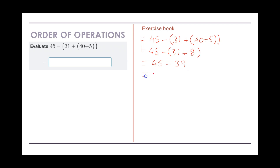Now we've just got one operation left: 45 minus 39 equals 6. Even though it looked fairly complicated with all those brackets, it's actually very straightforward if we take it step by step — solve the innermost bracket first, get the answer, then solve the next bracket, and finally the remaining operation. The equation wasn't actually that many steps even though it might have looked a bit scary at the start.